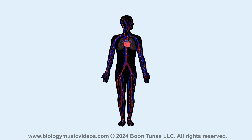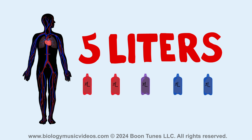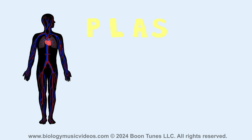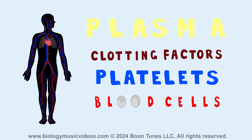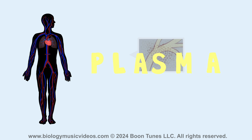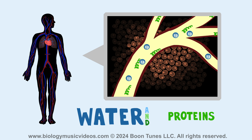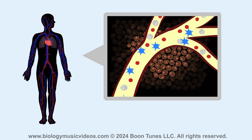The heart pumps blood throughout the body — five liters per minute approximately. It's made of plasma and as well clotting factors, platelets, and blood cells. Plasma is the fluid in the bloodstream — that's mostly water and proteins. It transports blood cells and is replete with platelets, nutrients, and heat.